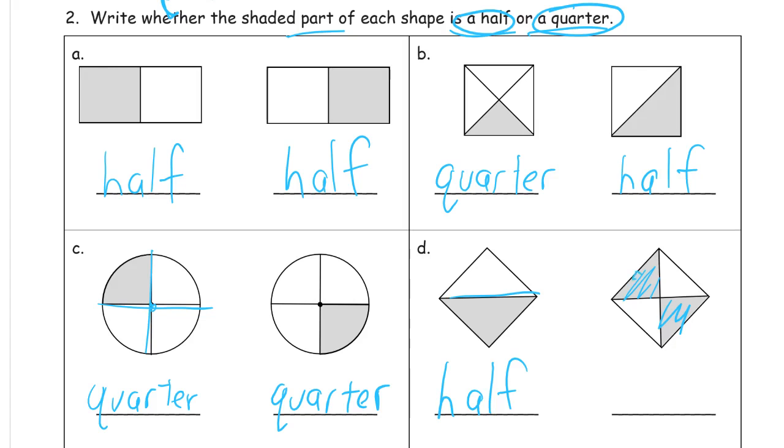You know, this shaded part. Isn't that the same as the unshaded part? They're the same size. So it looks like two quarters, but really it's half of that square is shaded in. So that's half.